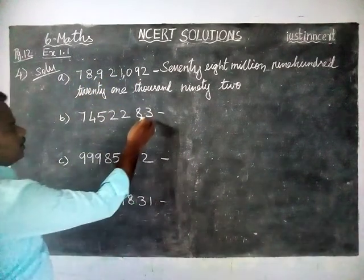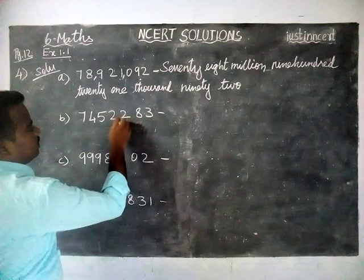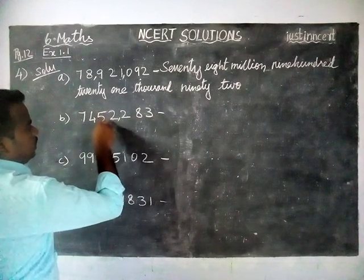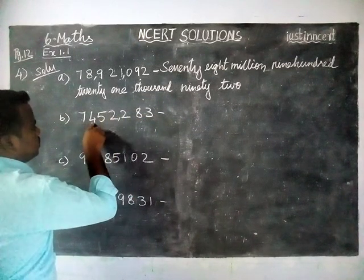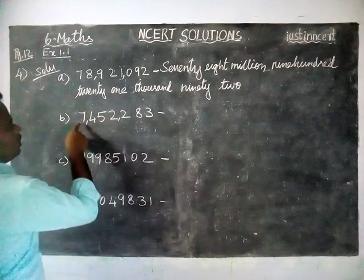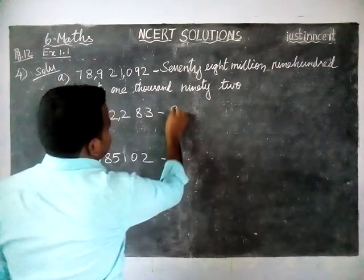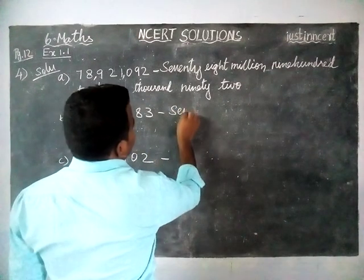Next, the second number. Ones, hundreds, comma, thousands, ten thousands, hundred thousands, comma, million. So this is 7,000,000...